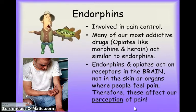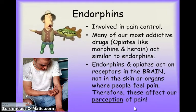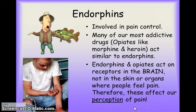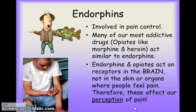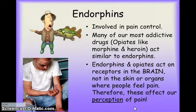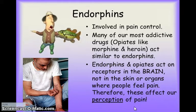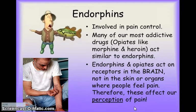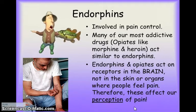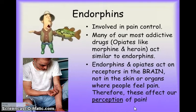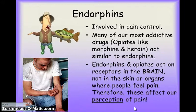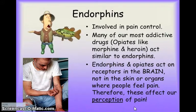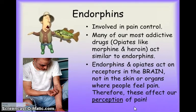Opiates like morphine and heroin act the same as our body's endorphins. Research has found that endorphins and the drugs that mimic them act on receptors in the brain. For example, when you take Tylenol for a headache or a sore knee, the Tylenol doesn't know exactly where to go in your body — it affects certain receptors in the brain, and the brain is where we actually experience the perception of pain.